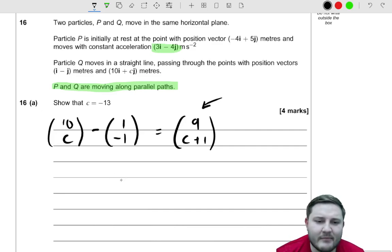So that must mean that k, some multiple that I don't know, some constant, multiplied by the acceleration of particle P, (3, -4), must equal (9, c+1).